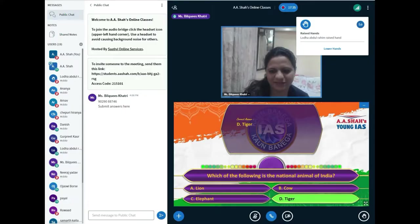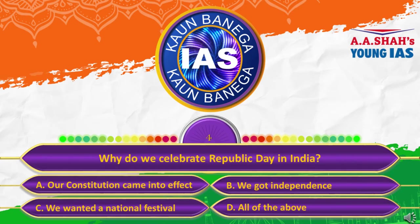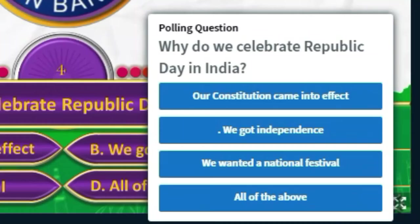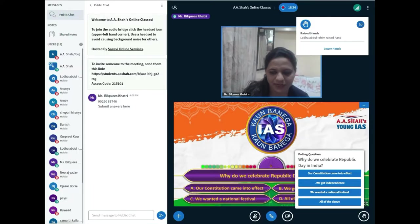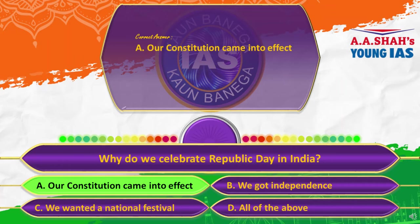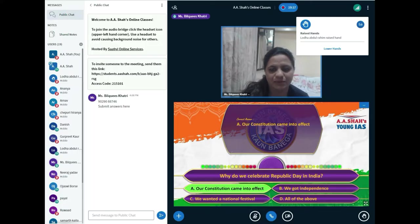Why do we celebrate Republic Day in India? A, our constitution came into effect; B, we got independence; C, we wanted a national festival; or D, all of the above. The correct answer is: our constitution came into effect. The day we got independence, we celebrate Independence Day. But Republic Day, 26 January, is the day when our constitution came into effect.